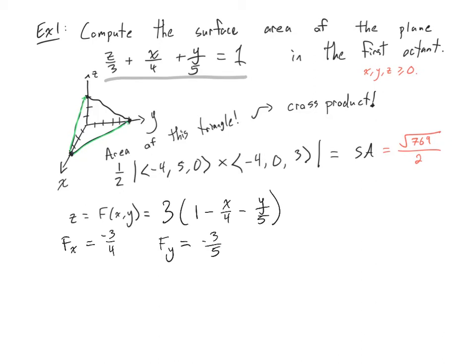And then my integral I'm going to set up, tells me I need to compute the surface area over a region, and we'll come back to that in a second to figure out exactly what that is, of the square root of 1 plus fx squared. So that's 9/16 plus 3/5 squared. So that's 9/25.